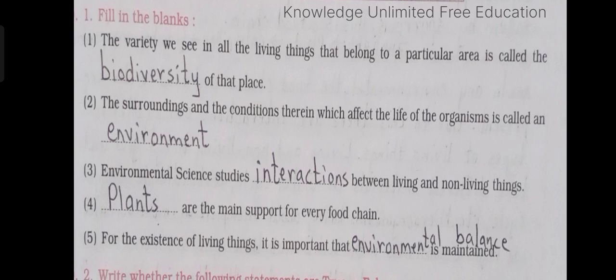Number 4: Dash are the main support for every food chain. Answer: plants. Number 5: For the existence of living things it is important that dash is maintained. Answer: environmental balance.